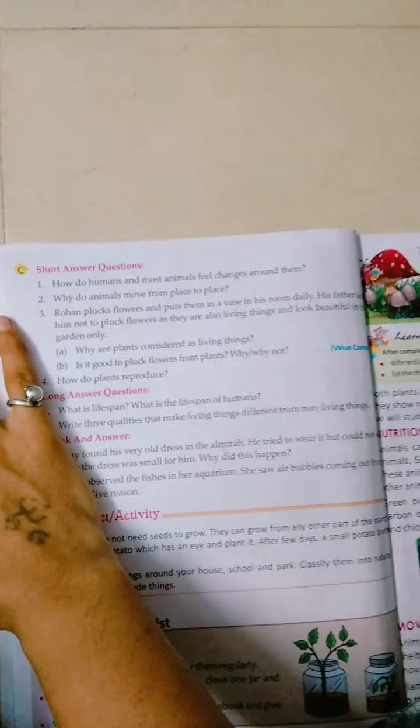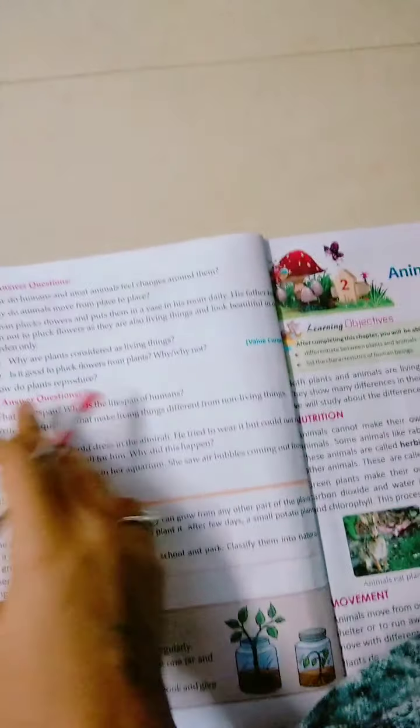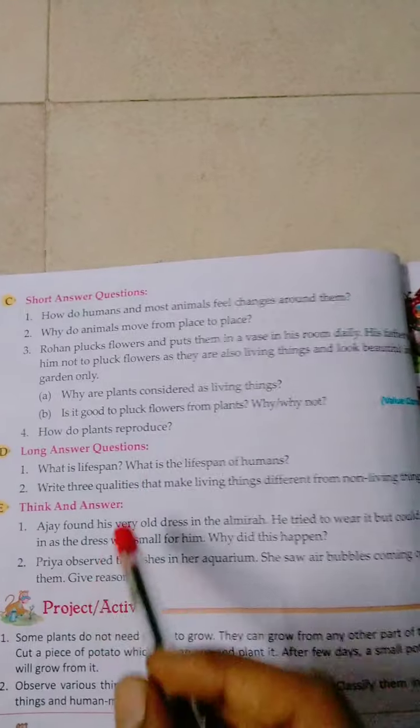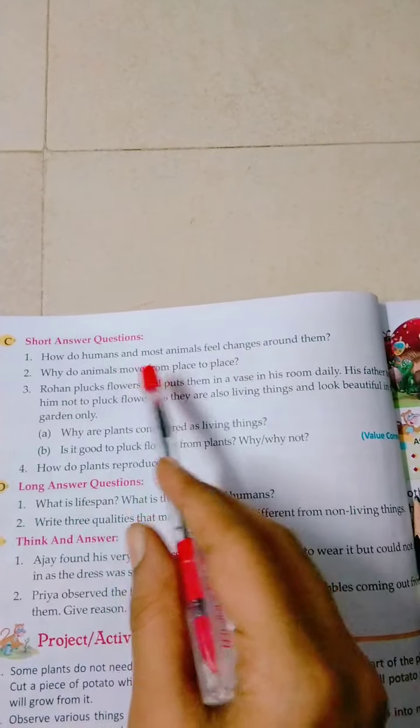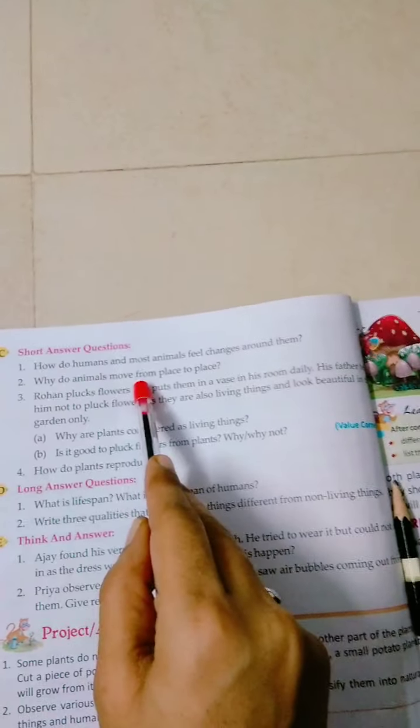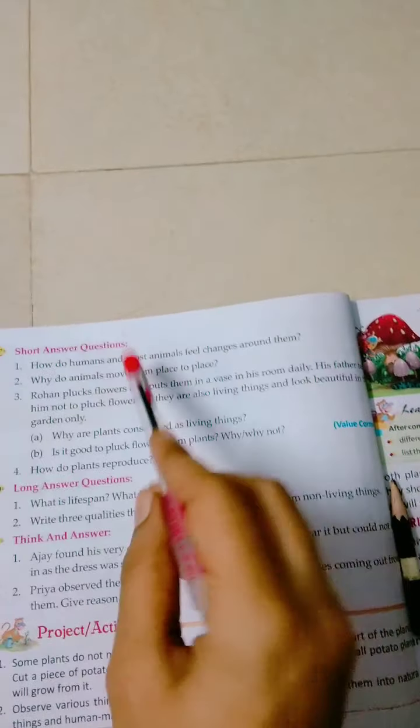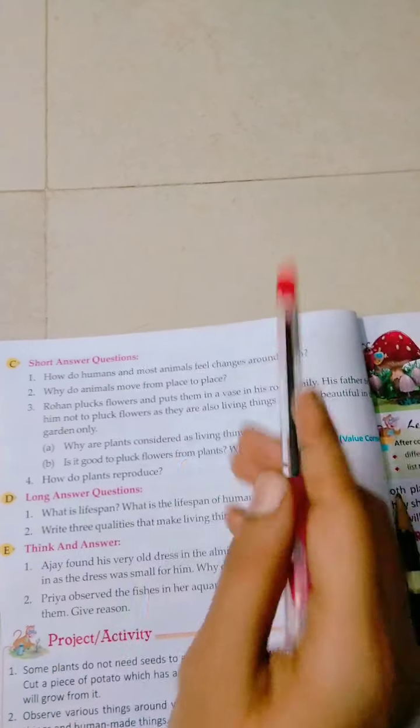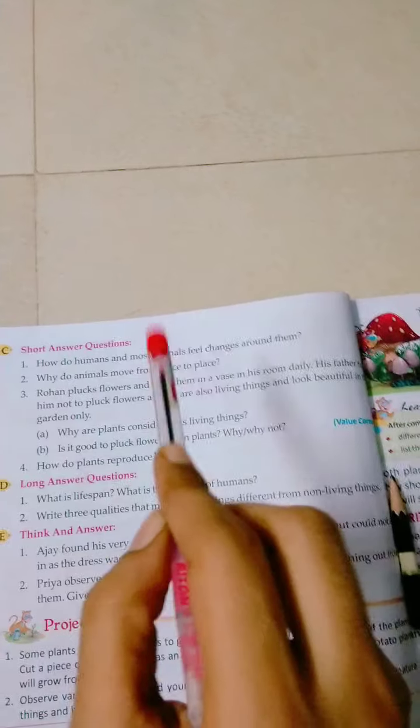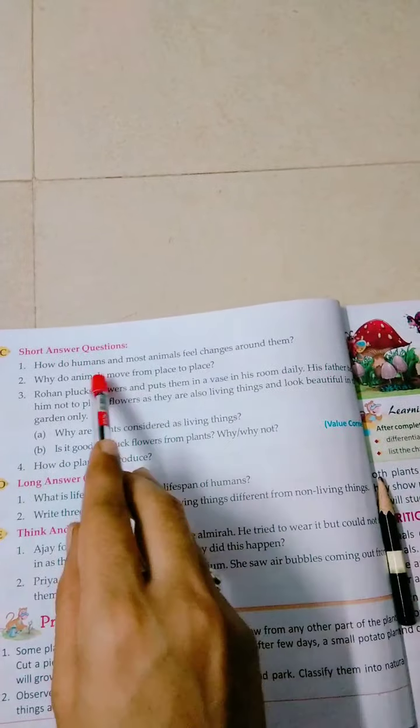Next question: Why do animals move from place to place? Animals move from one place to another place - why? Obviously they need food, to fulfill their food requirement, to complete their need for food. Because of that also, animals will go from one place to another place. Next will be shelter, meaning to find a place to live, animals also go from one place to another. And some animals, to escape from their enemies, also go from one place to another place. So the answer is: Animals move from place to place in search of food and shelter, or to run away from their enemies.